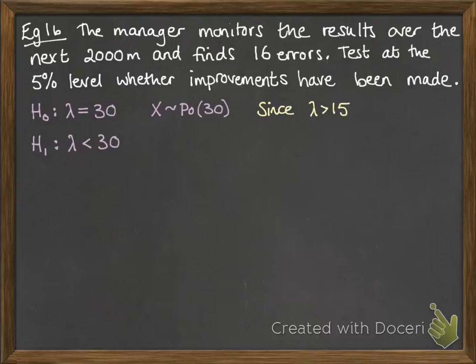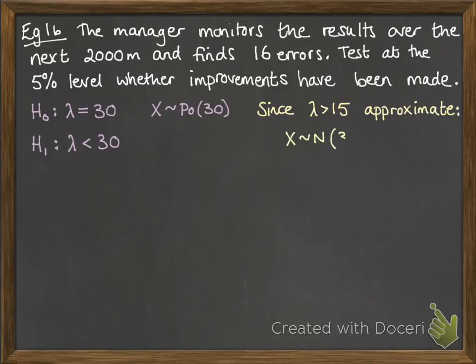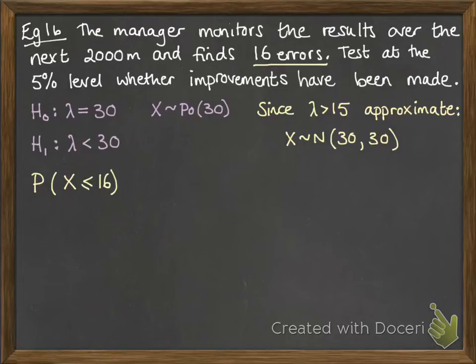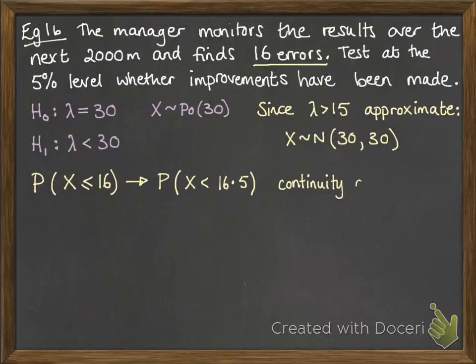Since lambda is greater than 15, we don't want to compute the probability for every value from 0 up to 30. So we make an approximation — we use a normal approximation, which we can do because lambda is large enough. We're testing whether there are 16 errors, and since we're using a normal approximation, we need to apply a continuity correction.